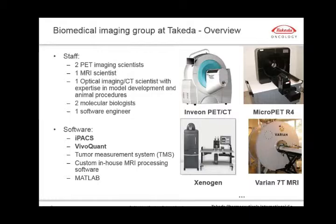In terms of modalities, we have an Enveon PET-CT scanner on which we conduct most of our nuclear medicine studies. We have a Micropet R4, should the Enveon break or should there be overflow from that machine. We also have a Xenogen for optical imaging experiments and a 7-Tesla MRI scanner. We also have SPECT capabilities, Maestro capabilities, a cryomicrotome with a Typhoon imager for autoradiography, and both liquid scintillation and gamma counting capabilities for radio tracer uptake assays that complement our imaging work.